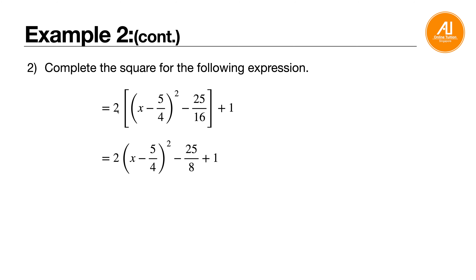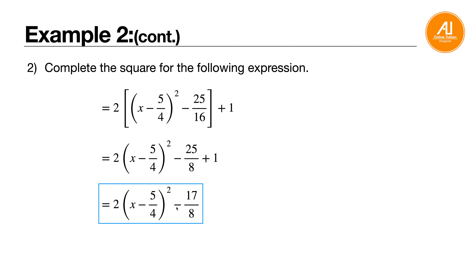Now the 2 is multiplied in. So 2 open bracket x minus 5 over 4, bracket squared. Then 2 times negative 25 over 16 gives negative 25 over 8. Then plus 1 just bring down. Last step: combine those two terms — you get minus 17 over 8. So the vertex form is 2 times x minus 5 over 4, bracket squared, minus 17 over 8.